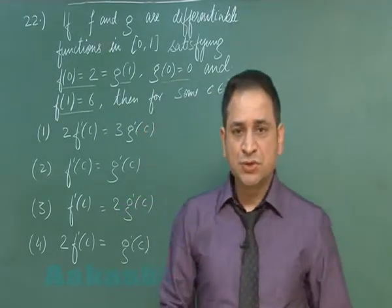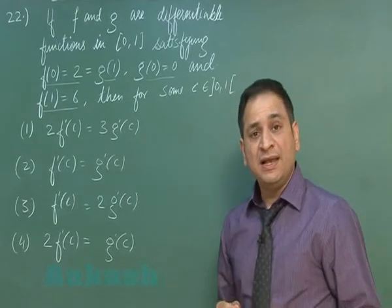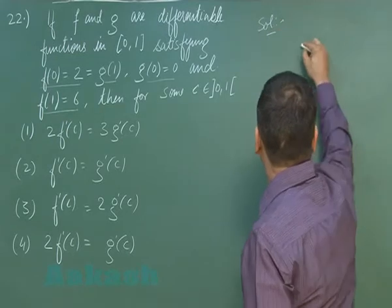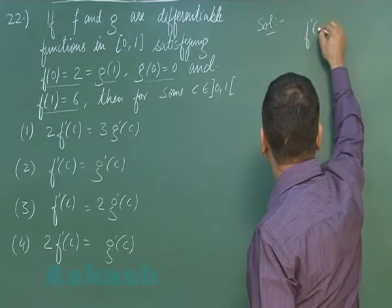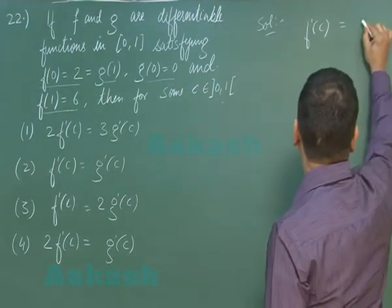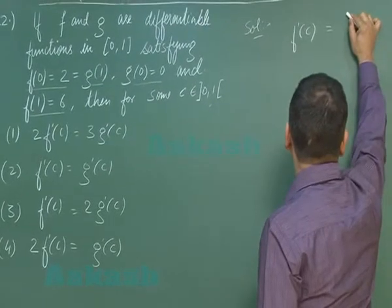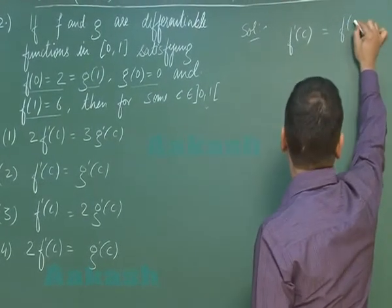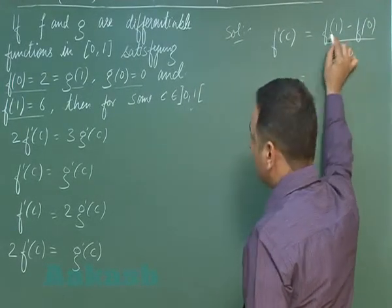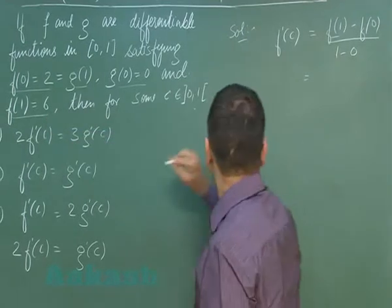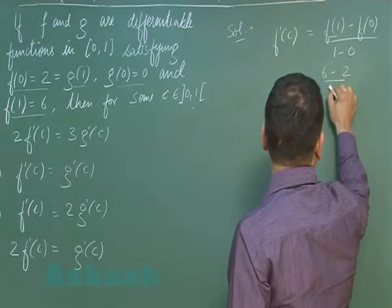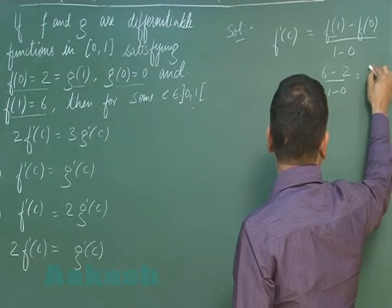Clearly this question involves an application of Lagrange's Mean Value Theorem. There exists some c between 0 and 1 whose slope equals f(1) minus f(0) upon 1 minus 0. We have f(1) equal to 6 and f(0) equal to 2, so f'(c) comes out to be 4.